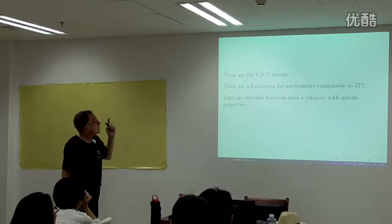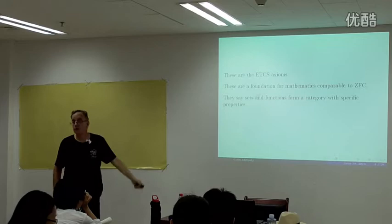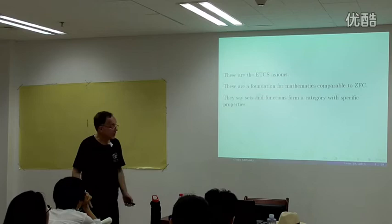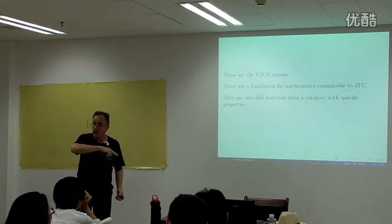We're taking the category axioms for granted here — the Eilenberg-Mac Lane axioms. These sets and functions form a category with specific properties. Those axioms allow all kinds of different categories, some very trivial, some extremely complex and very much unlike sets. We're giving axioms that determine that it is like sets — that it is sets.